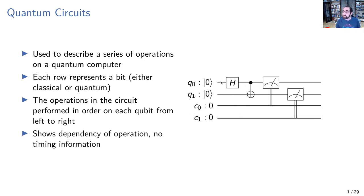They show dependency of operation with no implicit timing information, although they can be annotated to add timing information. One thing worth pointing out is the measurement gate. When you measure a qubit, you collapse its state and read out a binary 0 or 1, which is what the classical bit represents. In this circuit example, when we read qubit 0, we measure it to classical bit 0. Once we measure it, whatever quantum state we had before, we lose.